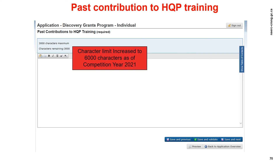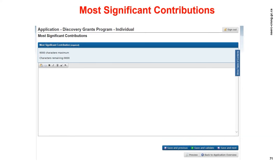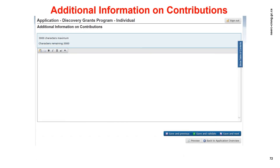Let's move on to the Past Contributions to HQP Training module. Describe your past contributions to the training of highly qualified personnel. Note that the character limit has increased to 6,000 characters for competition year 2021. Click save and validate, then save and next to proceed. Let's move on to the Most Significant Contribution module — a limit of 9,000 characters is allowed. Describe up to five of your most significant contributions to research and/or practical applications over the last six years. Contributions made more than six years ago that are having impact now — for example, exploitation of a patent, inclusion in a code — may be described in this section only. A contribution does not have to be a single publication; a group of publications on a specific subject could be discussed as one contribution. You may include the full reference in this text box or provide the appropriate reference to your NSERC CCV.